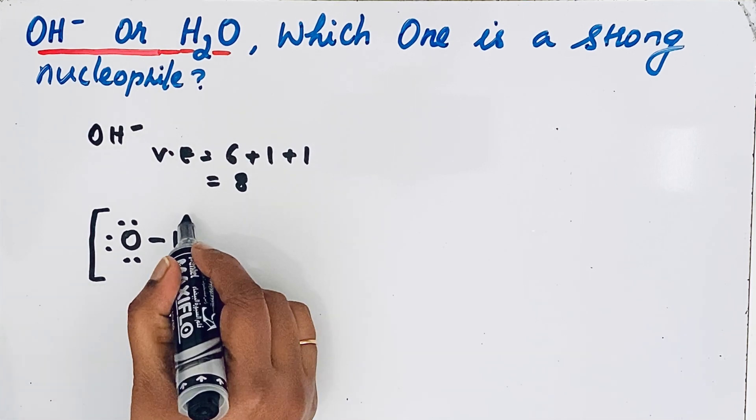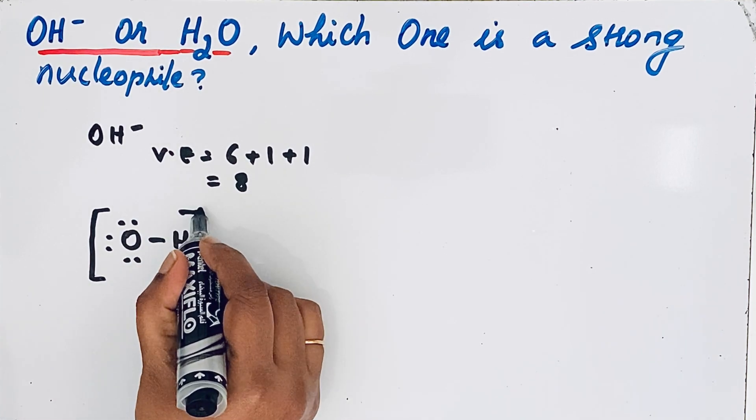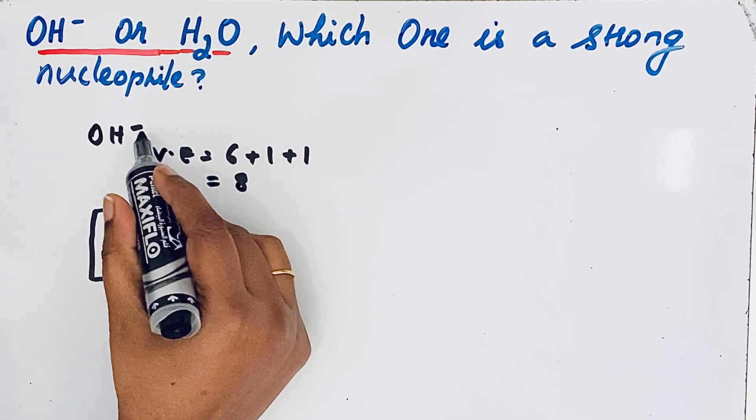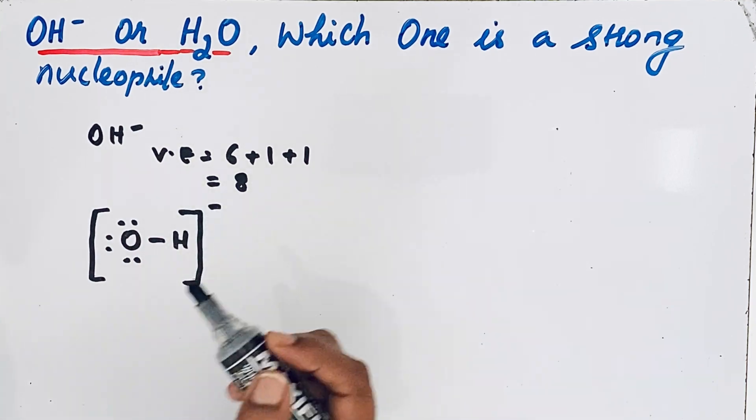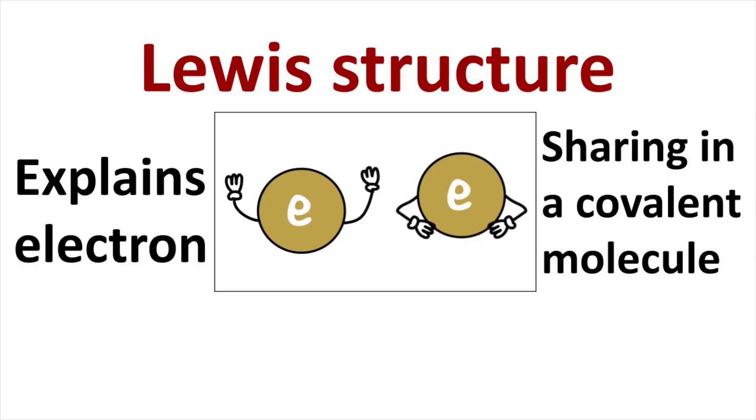Since it is a polyatomic ion, we draw a bracket and write the minus charge here. This is the Lewis structure of OH- ion.